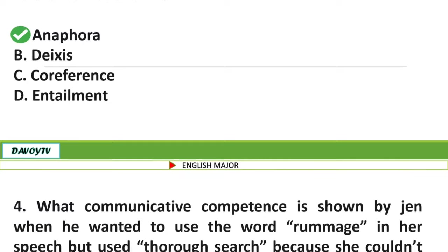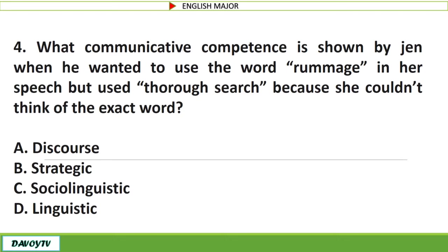Question number 4. What communicative competence is shown by Jen when she wanted to use the word 'rummage' in her speech but used 'thorough search' because she couldn't think of the exact word? A. Discourse. B. Strategic. C. Sociolinguistic. D. Linguistic. The correct answer is letter B: Strategic.